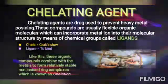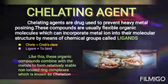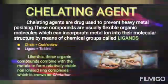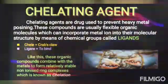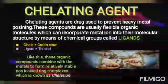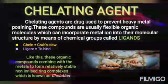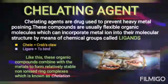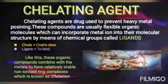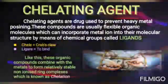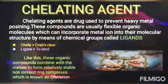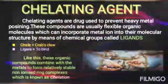Chelating agents are the drugs used to prevent heavy metal poisoning. These compounds are usually flexible organic molecules which can incorporate metal ions into their molecular structure by means of chemical groups called ligands. Through the ligands, the chelating agent will bind upon the metal atom and it will be removed from the cell. The word chelating can be split into two: 'chele' and 'ligate.' 'Chele' means 'crab's claw.' As a claw or pincer can hold or grasp something, chelating agents bind upon the metal atoms and help avoid metal poisoning. These organic compounds combine with the metal to form a relatively stable, non-ionized ring complex known as a chelate, and the whole process is known as chelation.